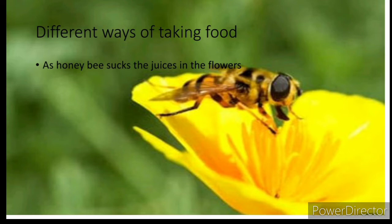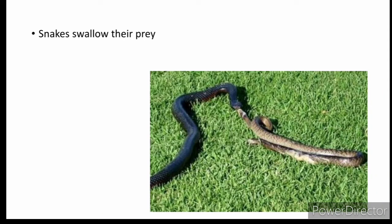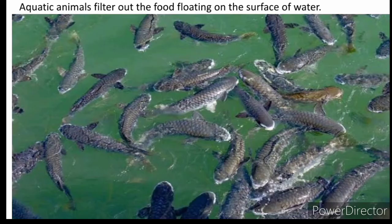Animals take food in different ways. For example, honey bees suck juices from flowers, that is nectar. Infant babies of humans and many animals feed on mother's milk. Snakes swallow their prey completely — they do not chew it, as they don't have teeth for chewing. Aquatic animals filter out food floating on the surface of water.